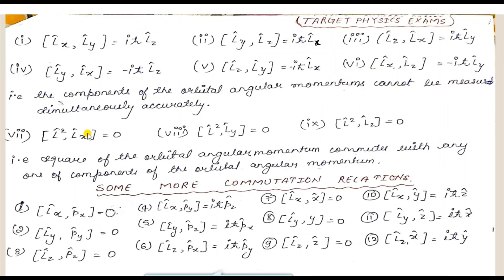The components of orbital angular momentum — Lx, Ly, Lz — cannot be measured simultaneously and accurately because their commutation relations are not zero, so we will not get simultaneous eigenfunctions. However, if you take L² (the square of orbital angular momentum) and commute it with any component, you will see it gives zero. That means L² commutes with any one of the components of orbital angular momentum.